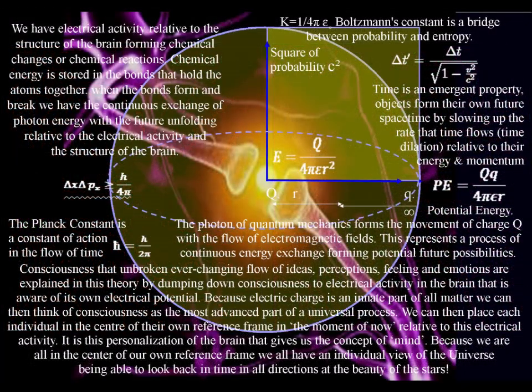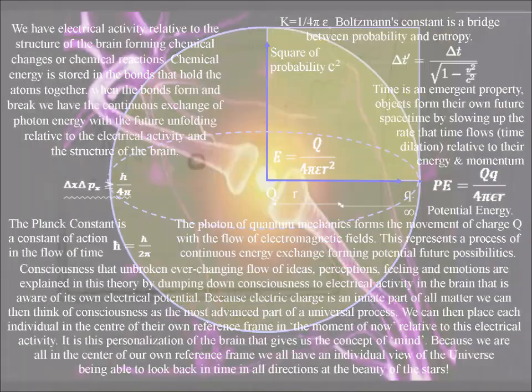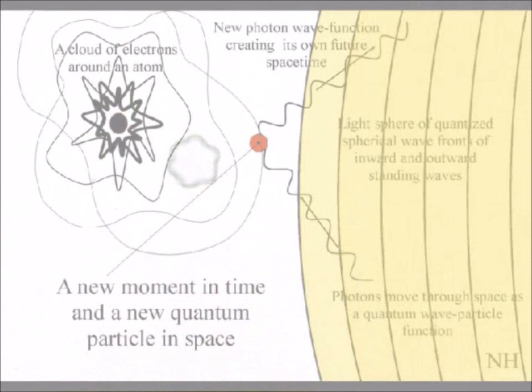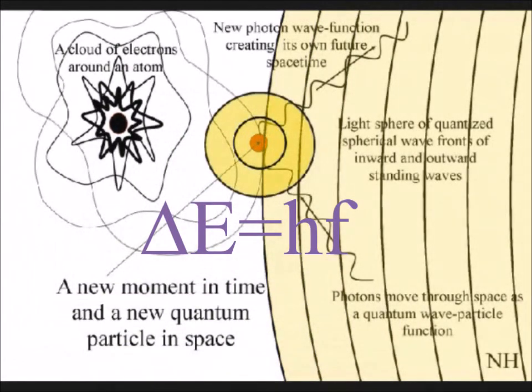Whenever the bonds between the atoms form and break, there is an exchange of photon energy, so all branches of chemistry stem from physics. In physics, the photon represents the particle aspect of light and is a carrier for electromagnetic fields.